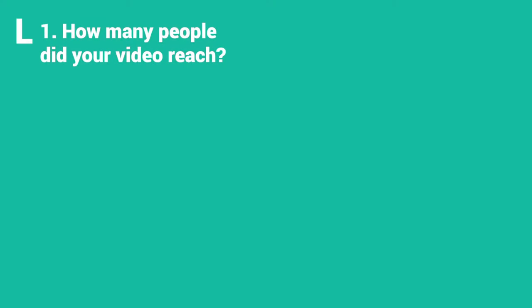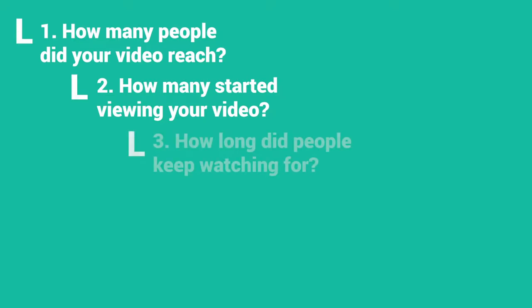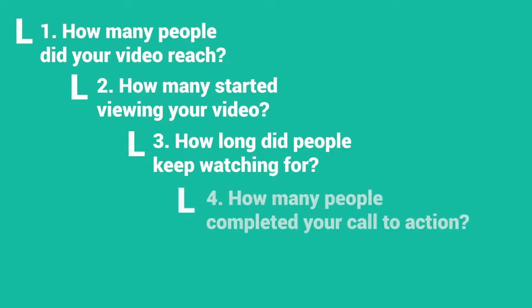There are five stages you should track with those five basic video metrics. Number one: how many people did your video reach? Number two: of those you reached, how many people started viewing or playing your video? Number three: of those who started watching, how long did they keep watching?